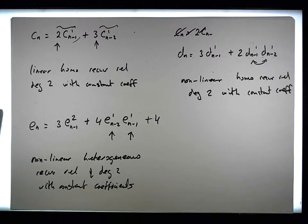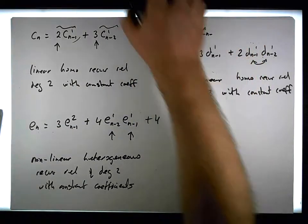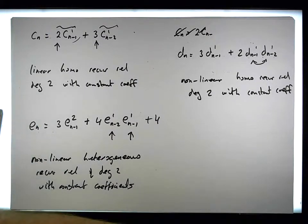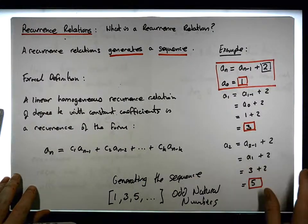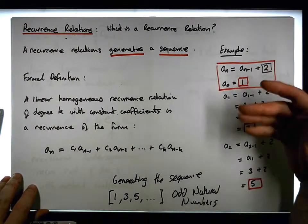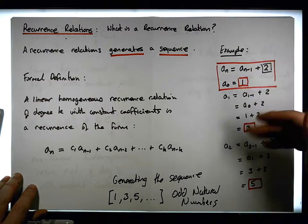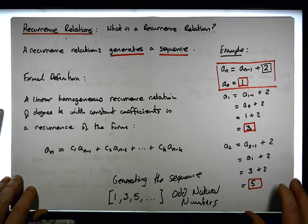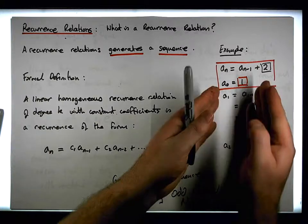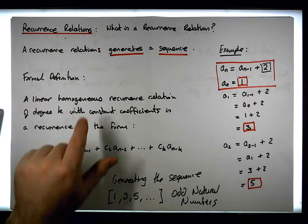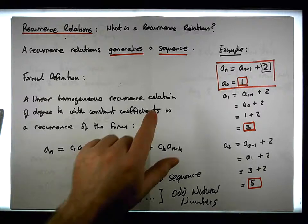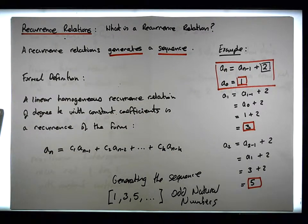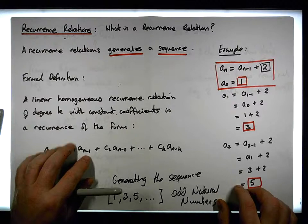This is Jonathan Lambert with Maths and Stats. I hope this video — the first in our series on recurrence relations — was helpful in defining what recurrence relations are, how they generate sequences, and the associated terminology: linearity, homogeneity, degree, and constant coefficients. I hope it was intuitive and helpful. Thanks for watching.